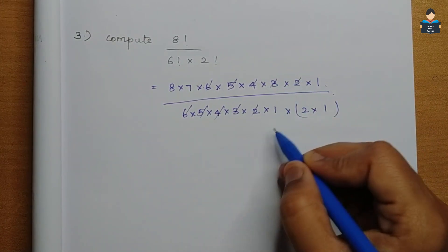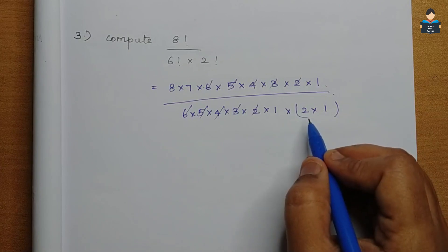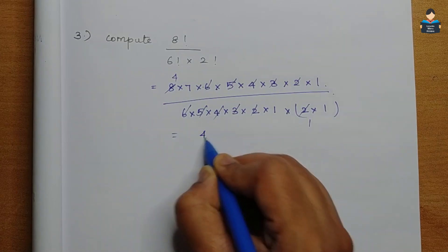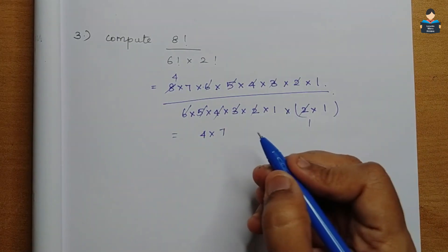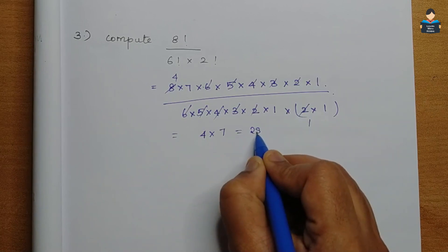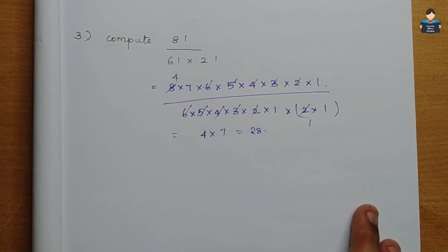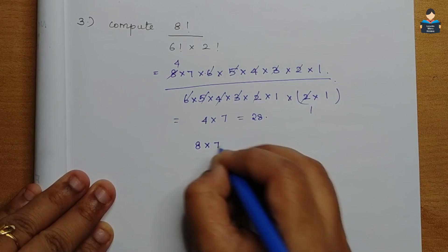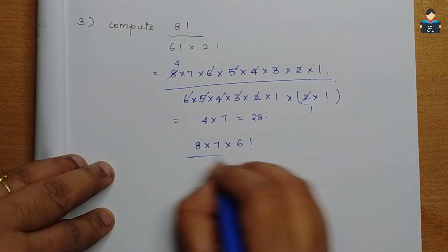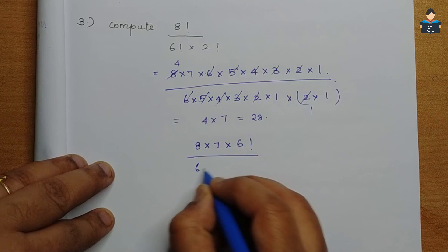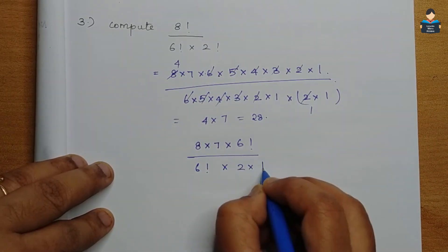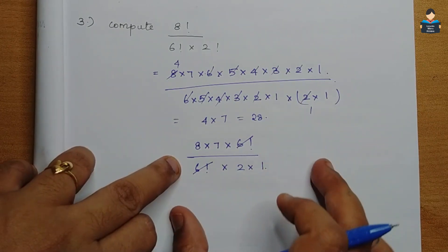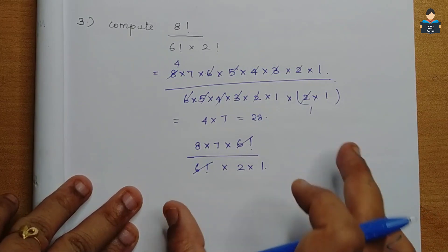We cancel the 6 factorial from numerator and denominator. The simpler method: write 8 factorial as 8 into 7 into 6 factorial, and the denominator has 6 factorial into 2 into 1. So 6 factorial cancels out, leaving 8 into 7 divided by 2 into 1, which gives 4 into 7 = 28.